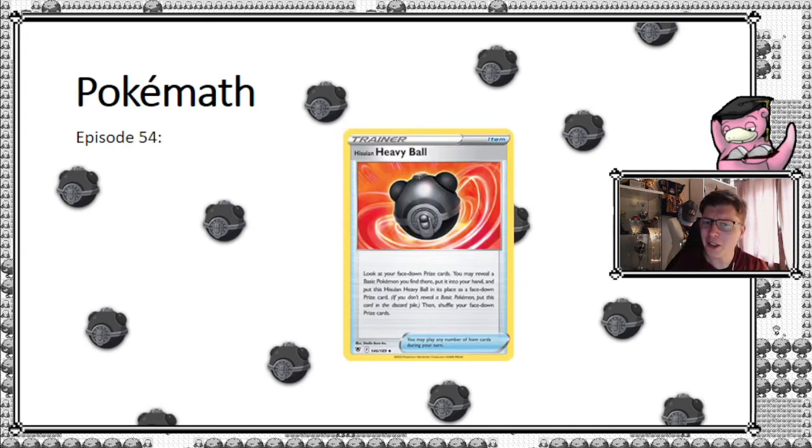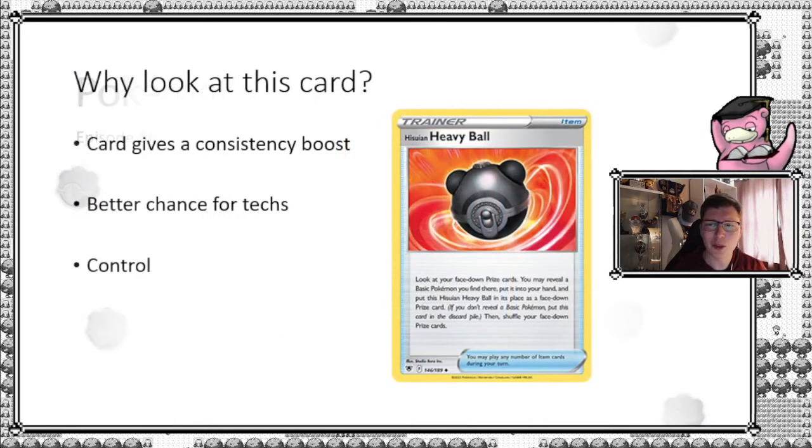But before we get into the math details, let's take a more detailed look at what the card actually does for you. First of all, it lets you look at your face down prize cards and enables you to fetch a basic Pokemon from there and you can then replace it with the Hisuian Heavy Ball. If you don't find any basics, you simply just discard the Heavy Ball just like any other item.